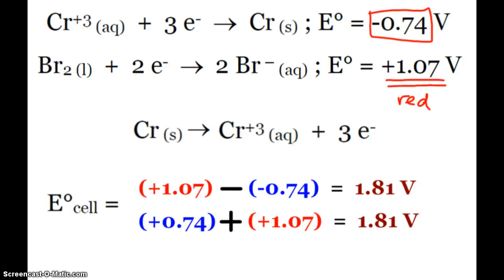Now for my cell voltage calculation. Either way that you want to do it, we should end up with 1.81 volts. If you end up with half reactions that are both negative, it's still the more positive, the one that's closer to zero in value, that would end up staying as the reduction.